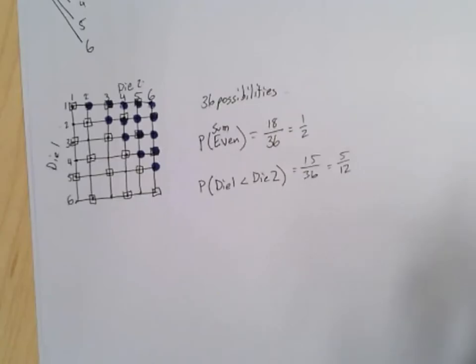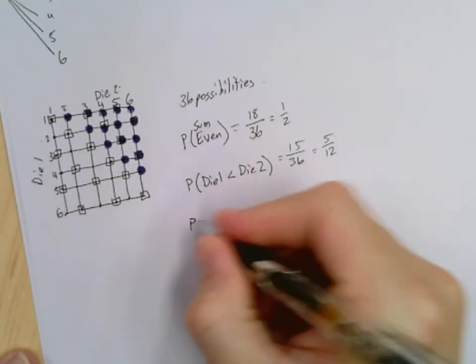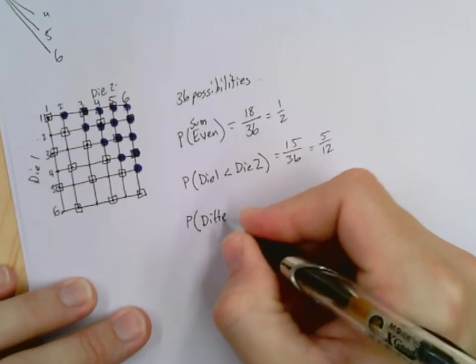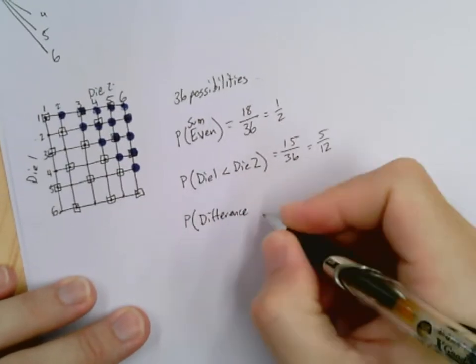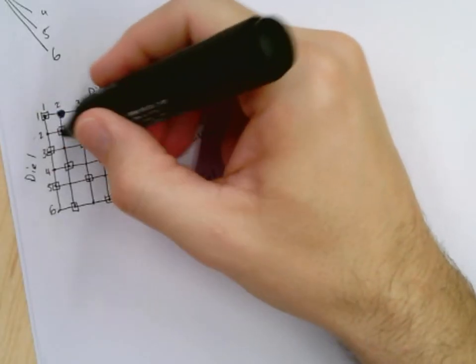All right? So let's go ahead and do maybe one more. Let's say, what is the probability that the difference between the dice is one? So die one minus die two is one, or die two minus die one is one.